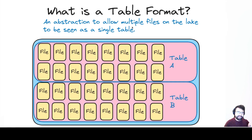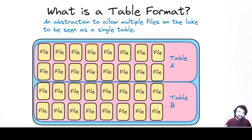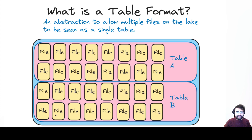That data could be in one file or a thousand files, but we just know it as a particular table. That is the purpose of a table format. The table format brings that layer of abstraction — one you don't see in databases and data warehouses — and brings it to the data lake. That way you can see all the files stored on your favorite storage layer, but there's a metadata layer that allows us to say: these files over here are known as Table A, and these files over here are known as Table B.